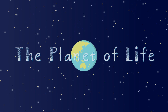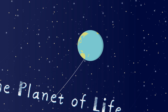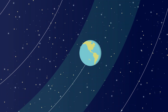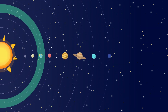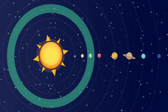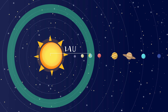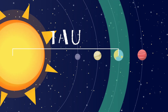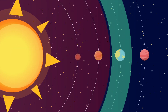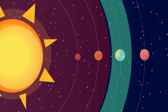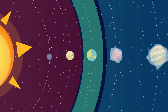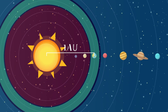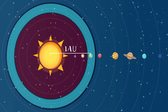Earth, the planet of life. We have already briefly mentioned the habitable zone. This habitable zone is the area around a central star where water exists in liquid form. In our solar system, the central star is the Sun. The distance between the Earth and the Sun is one astronomical unit. Water vapor can be found on Venus, which is closer to the Sun than the habitable zone. There is ice on Mars, which lies beyond the habitable zone. Earth is the only planet in our solar system that is located in the habitable zone.